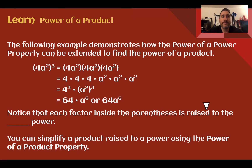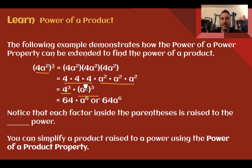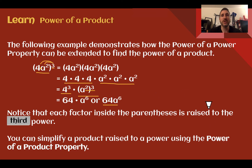Let's learn power of a product. The following example demonstrates how the power of a power property can be extended to find the power of a product. Here we have 4 times a squared raised to another power. This is really 4a squared three times. Using the commutative property, we put numbers and variables together: 4 to the 3rd power and a to the 2nd power three times. 4 to the 3rd is 64. a to the 2nd to the 3rd uses power of a power — 2 times 3 is 6 — giving 64a to the 6th. Notice that each factor inside, both 4 and a squared, were raised to the 3rd power — like distributing that power to each part of the product.